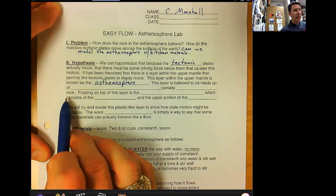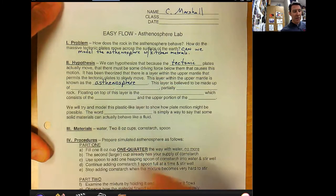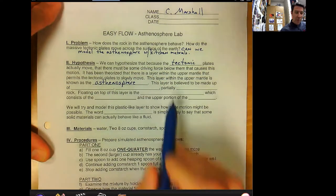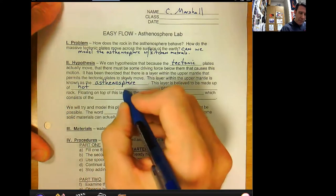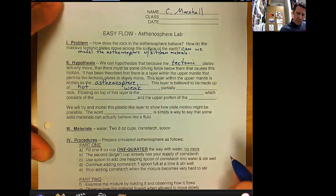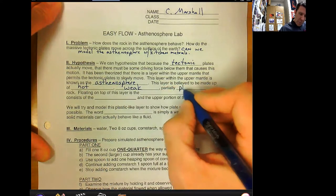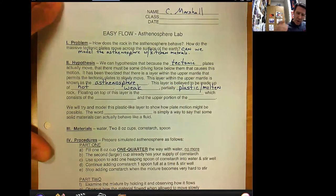It's still solid imaging of the Earth reveals that it's not liquid, it's not molten until you get all the way down to the core. The mantle is still solid but this layer is believed to be made up of hot, weak, partially plastic or maybe even somewhat molten but not completely melted.